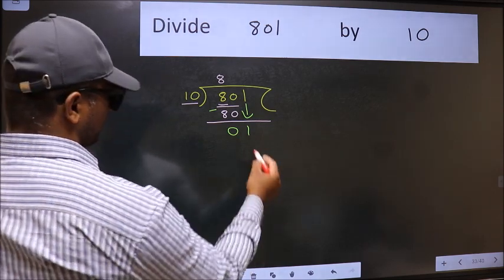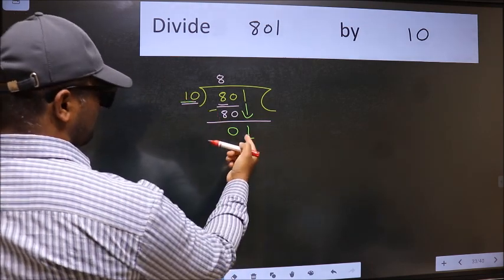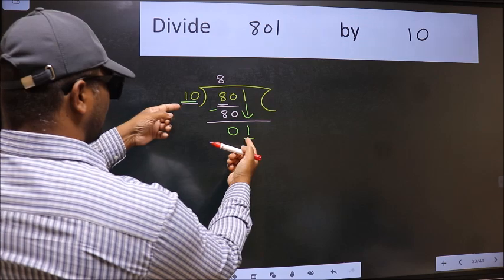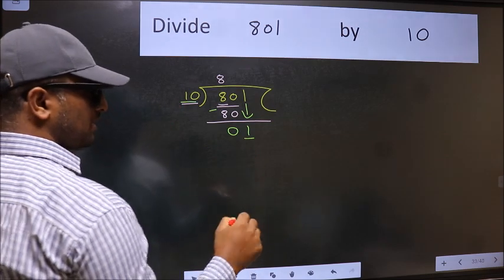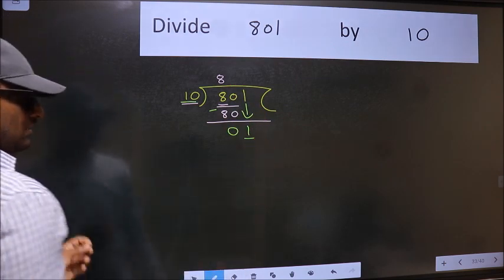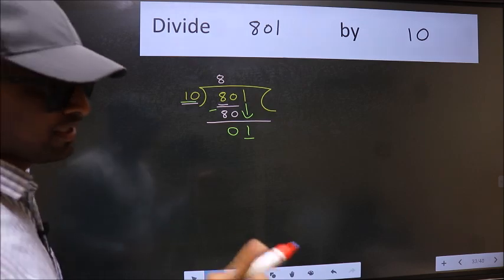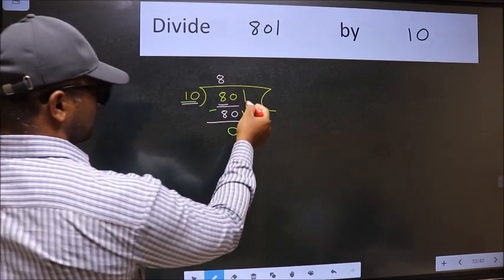Here we have 1 and here 10. 1 is smaller than 10. So what many do is they directly put dot, take 0, which is wrong. Why is it wrong? Because just now you brought this number down.